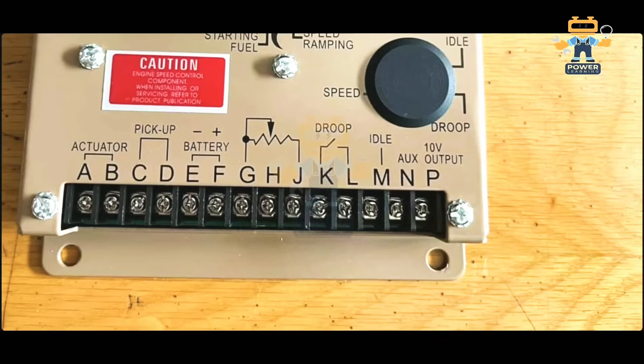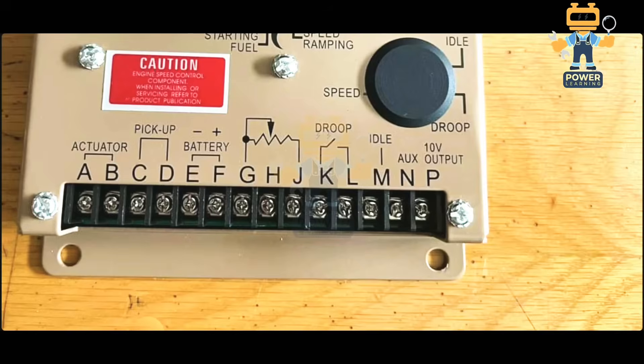After that we have N and P. When we are using synchronizing and we have external speed control, you will connect your speed control wires on terminal number N and terminal number G. So in this way you can connect your two wires for load sharing and synchronizing.